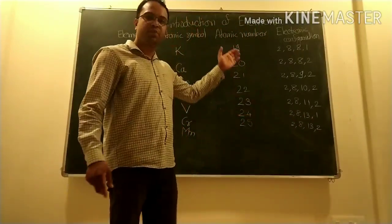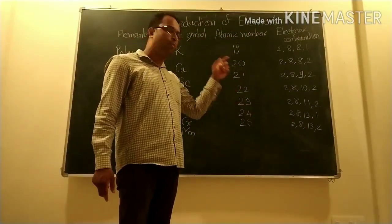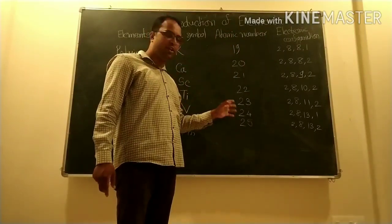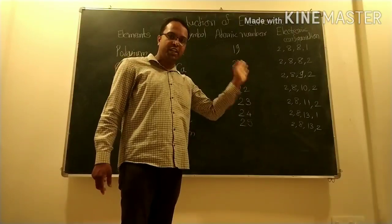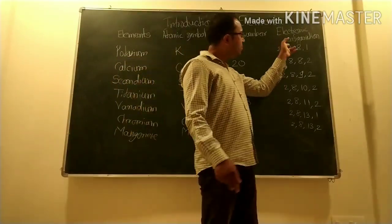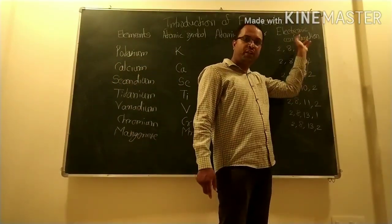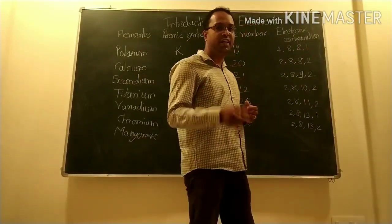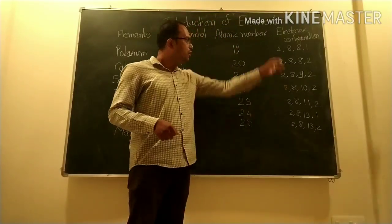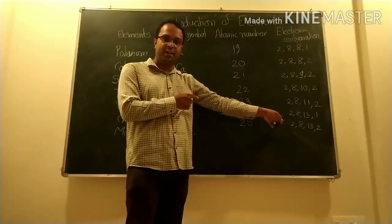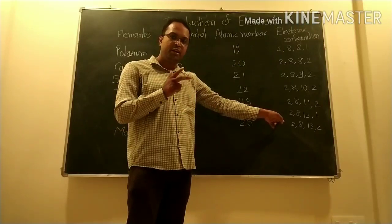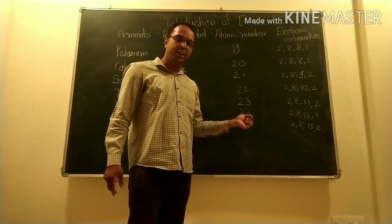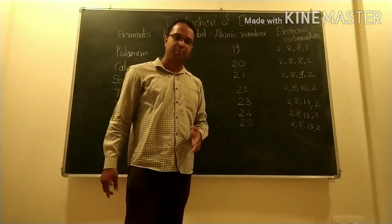These are the electronic configurations of elements with atomic numbers from 1 to 25, studied here in terms of shells. The study in terms of sub-shells is for 11th standard. We will study this further in the context of the periodic table in the next lecture.